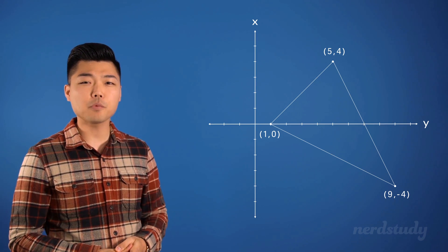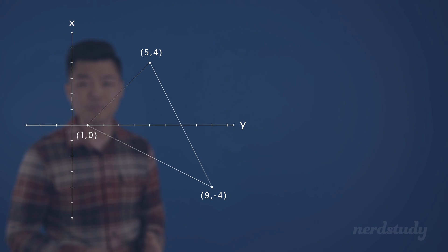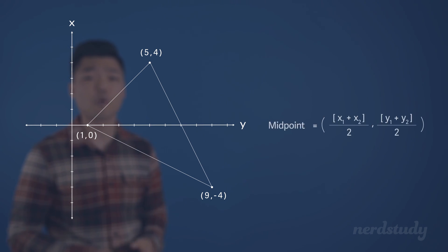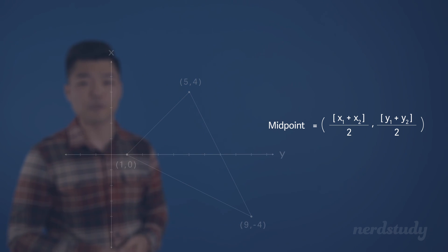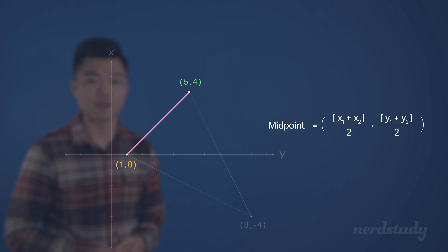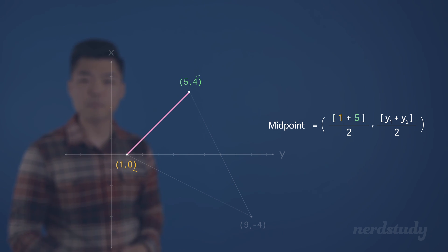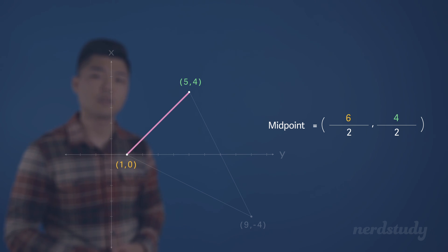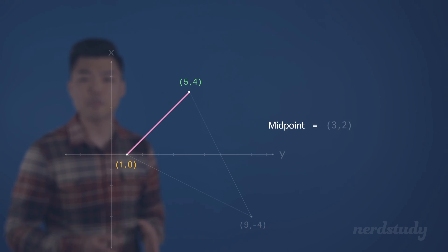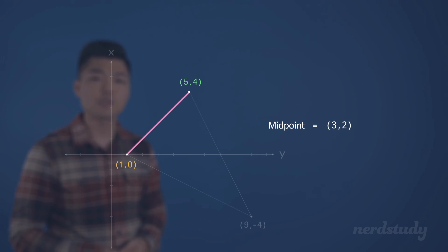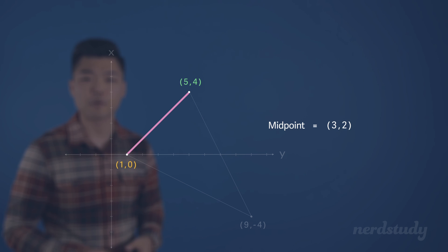How can we do this? Well, the midpoint of a line can be found by using the midpoint formula. So let's find the midpoint for this line segment right here. All we need to do is plug in the two coordinate points that make up the line segment into the formula. If we simplify this, we get the midpoint as (3, 2). So let's go ahead and plot that out on our graph.